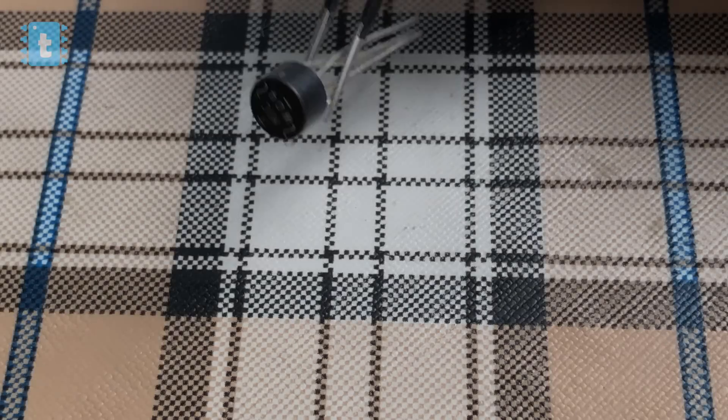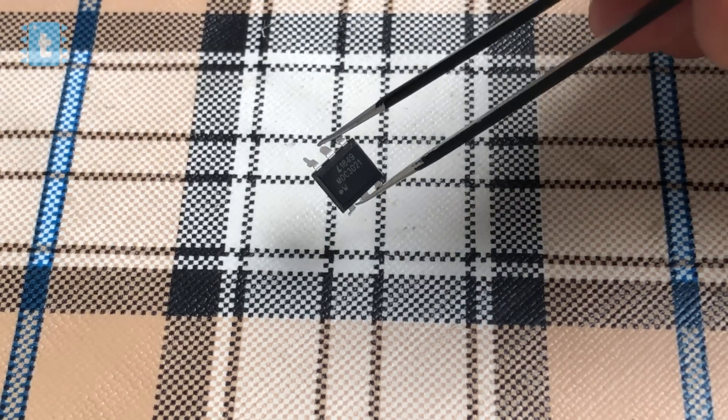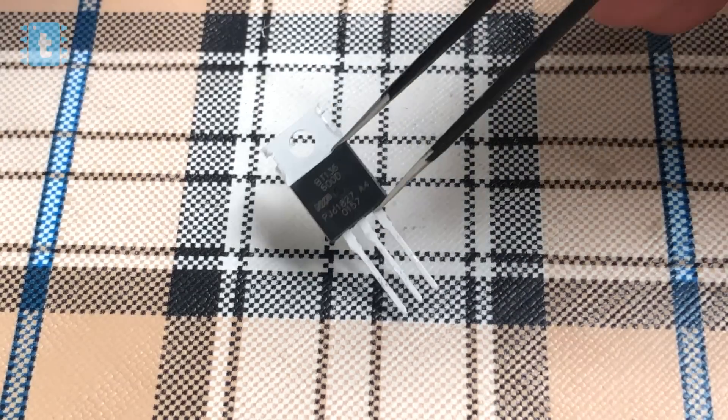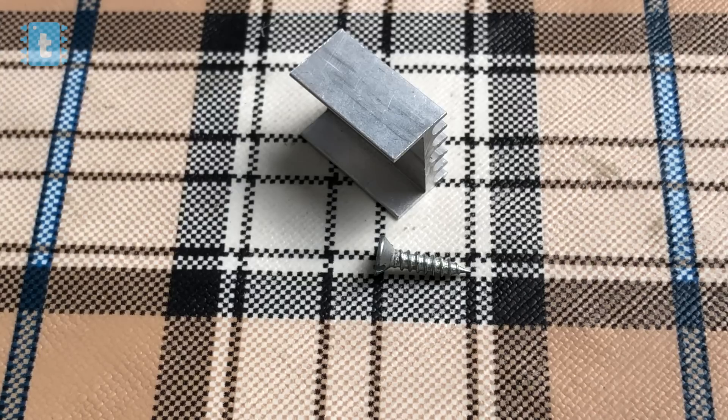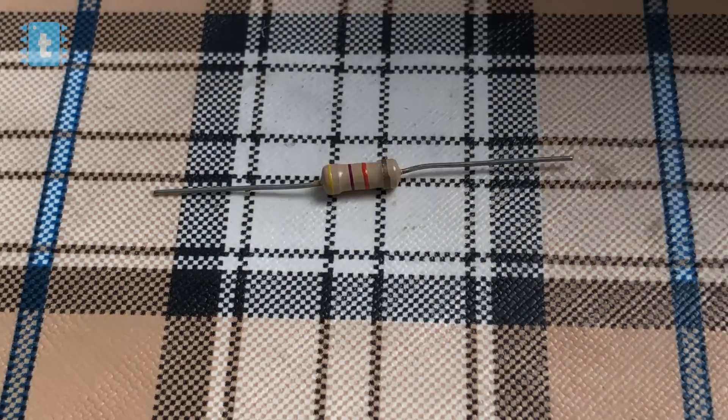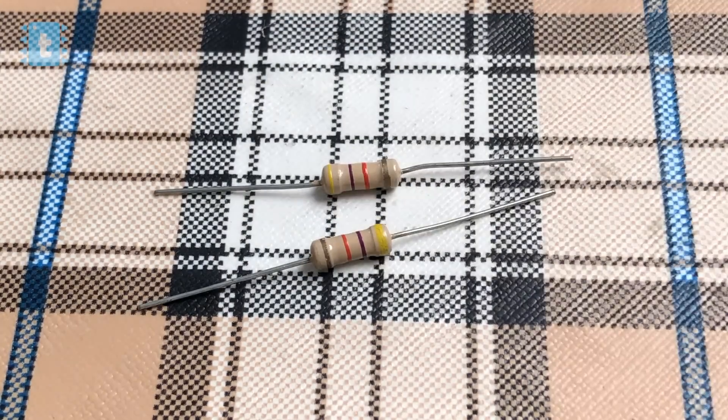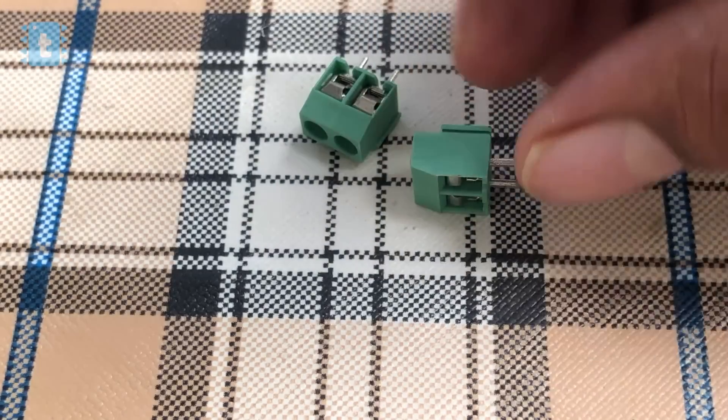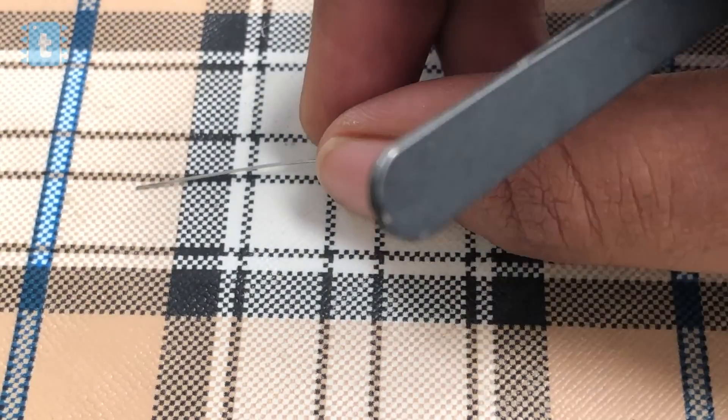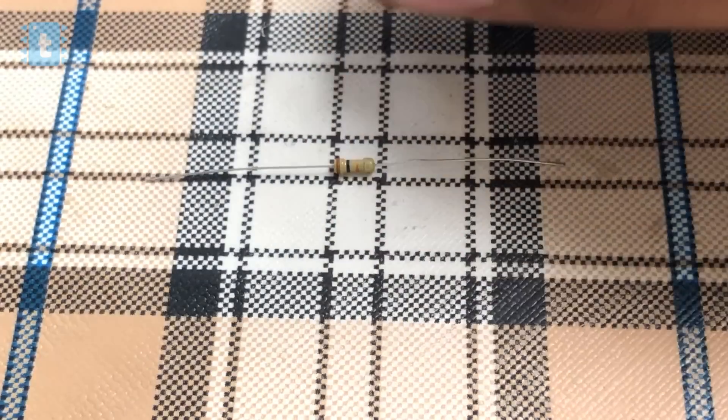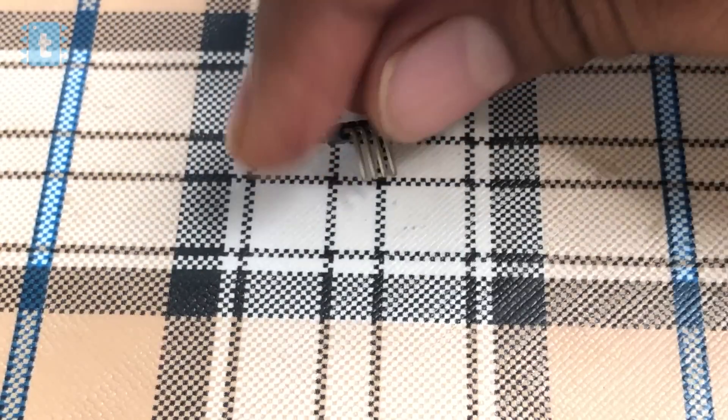For making this project you will need a bridge rectifier, one MCT2E IC, one MOC3021 IC, one BT136 TRIAC, one heat sink, 47K one watt resistors, two pin terminal connectors, 1K resistor, 10K resistor, and a four pin connector.